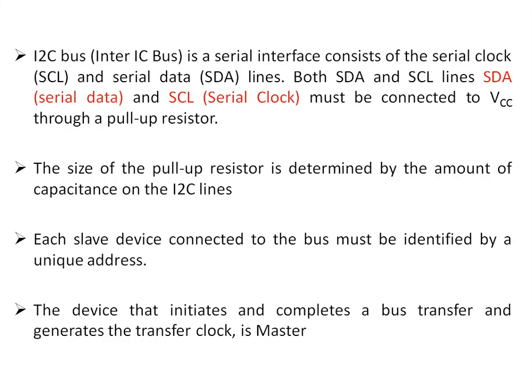The I2C bus is a serial interface consisting of SCL and SDA lines. These lines are connected to VCC through a pull-up resistor, and the size of this pull-up resistor is determined by the amount of capacitance on the I2C lines. Each slave device connected to the bus must be identified by a unique address, which is assigned by the IC manufacturer.